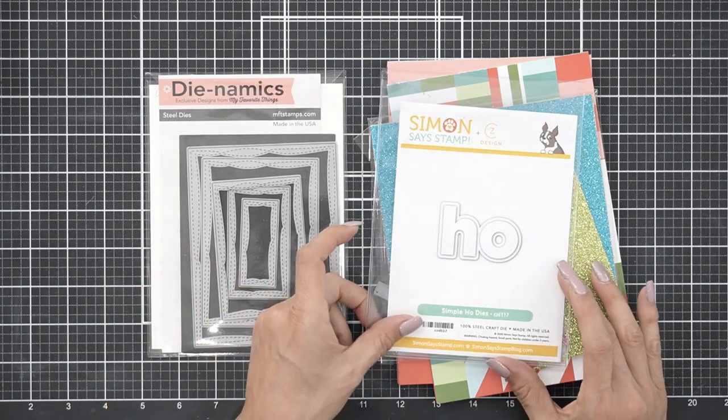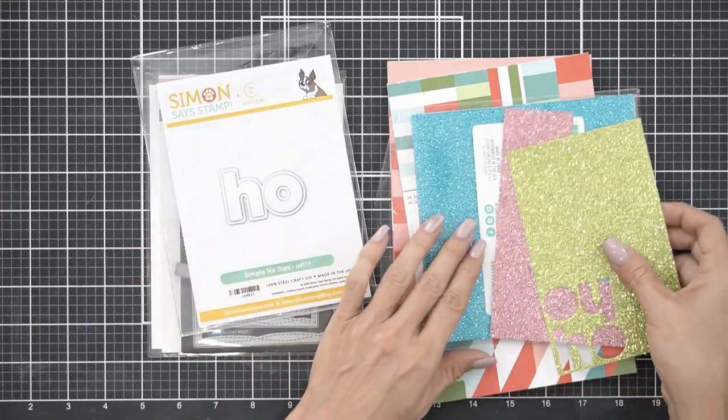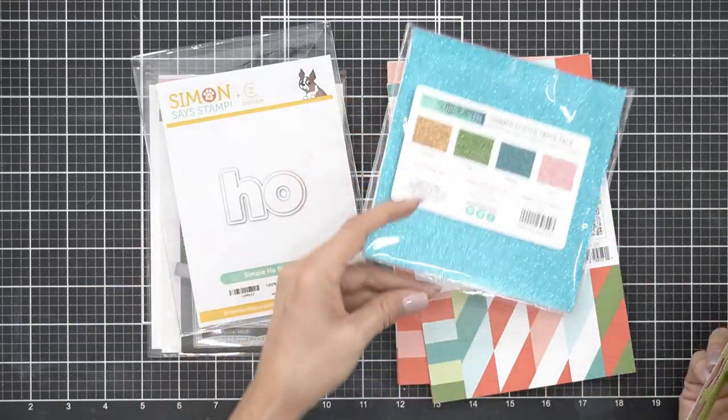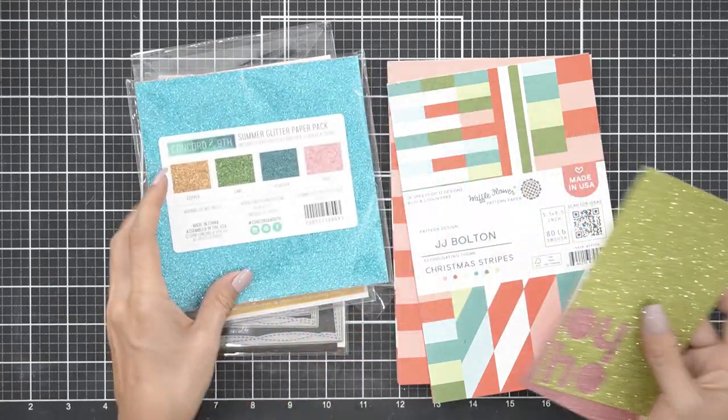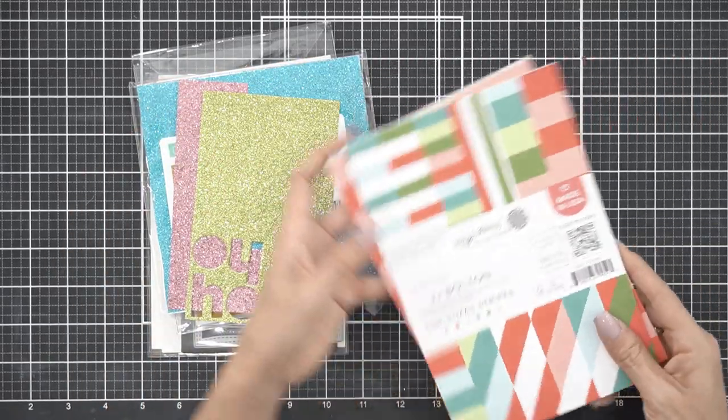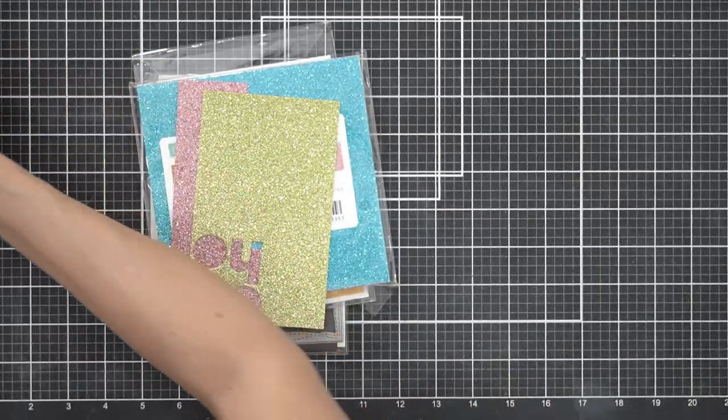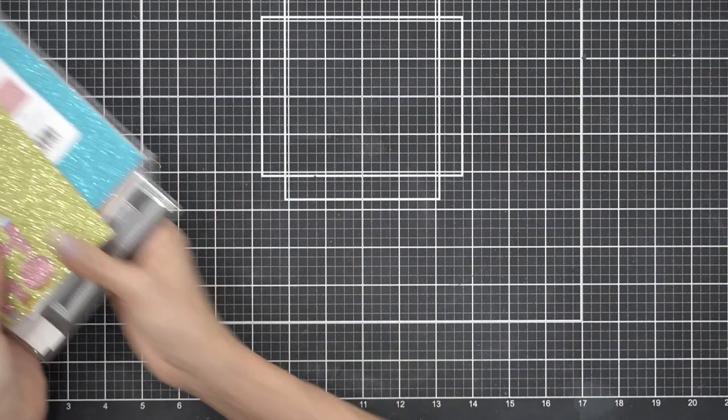So I'm going to start off with the My Favorite Things Wonky Rectangle die. I have the Simon Says Stamp Simple Ho dies, which is a strange name for a die, and I have the Concord & 9th Summer Glitter Pack. I'm also using the Waffle Flower Christmas Stripes.